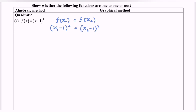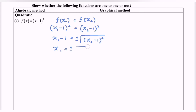Next, I'm going to simplify, where we will have x₁ − 1 equals ±√(x₂ − 1)². So for this case, x₁ will be equal to ±√(x₂ − 1)² + 1.